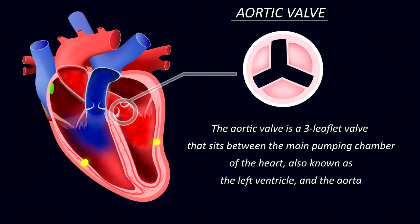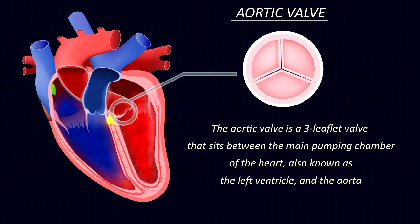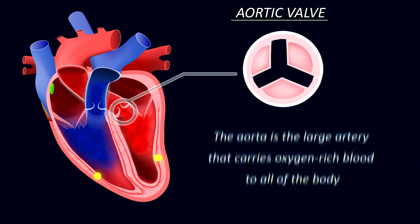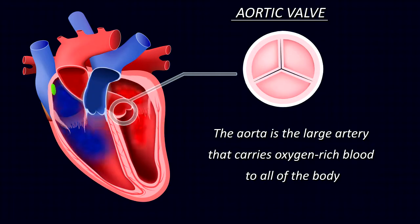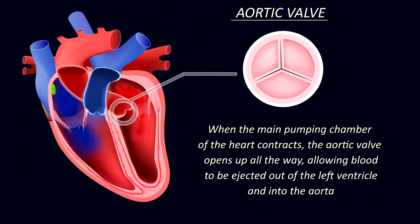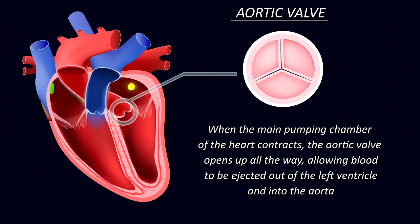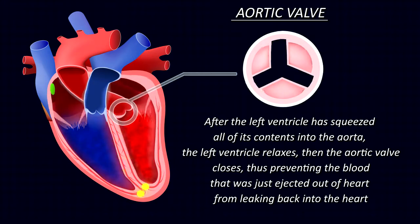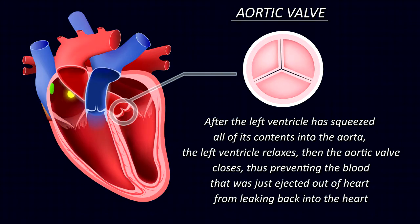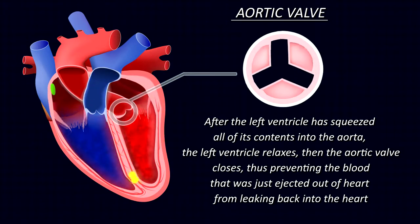The aortic valve is a three-leaflet valve that sits between the main pumping chamber of the heart, also known as the left ventricle, and the aorta — the large artery that carries oxygen-rich blood to all of the body. When the main pumping chamber contracts, the aortic valve opens up all the way, allowing blood to be ejected out of the left ventricle and into the aorta. After the left ventricle has squeezed all of its contents into the aorta, it relaxes and the aortic valve closes, preventing blood from leaking back into the heart.